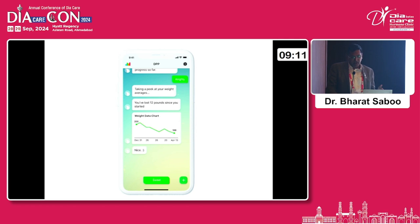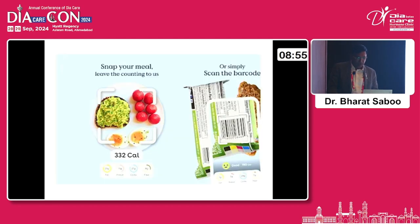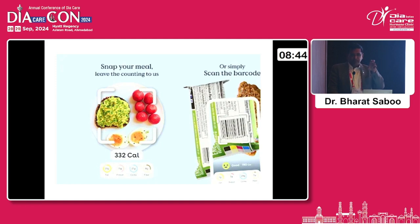The Nutrino app is very friendly in its language — it says things like 'taking a peek at your weight averages, you have lost 12 pounds since you started.' The whole algorithm takes food analysis and individual inputs to give output not possible for a normal human. You can snap food or scan a barcode to get the nutritive value, so if the food is packed, a snapshot of the barcode will give you the information.